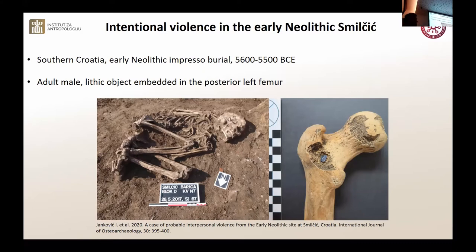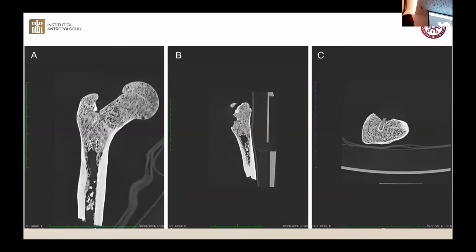When my PhD student Mario was analyzing the skeleton, he asked me about some kind of object embedded in the femur. My first impression was: just take it out, it's something post-depositional, nothing special. But then our colleague Ivor Janković said we should take a CT scan with Mislav. And actually, it turned out to be quite something else — as you can see on these CT scans, this is basically a stone embedded into the posterior femur, about two and a half centimeters deep.